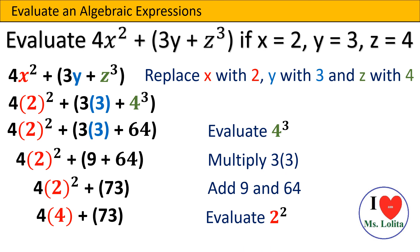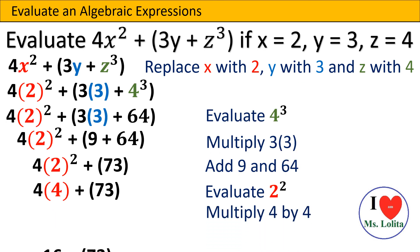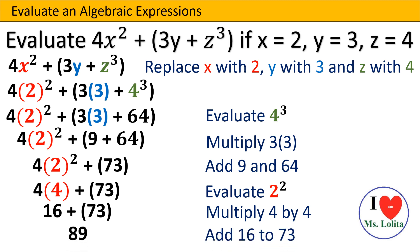Then we evaluate 2 squared, which gives us 4. We multiply 4 by 4, which gives us 16. Then we add 16 to 73, giving us 89. Therefore, 4x² + (3y + z³) when x = 2, y = 3, and z = 4 gives us 89.